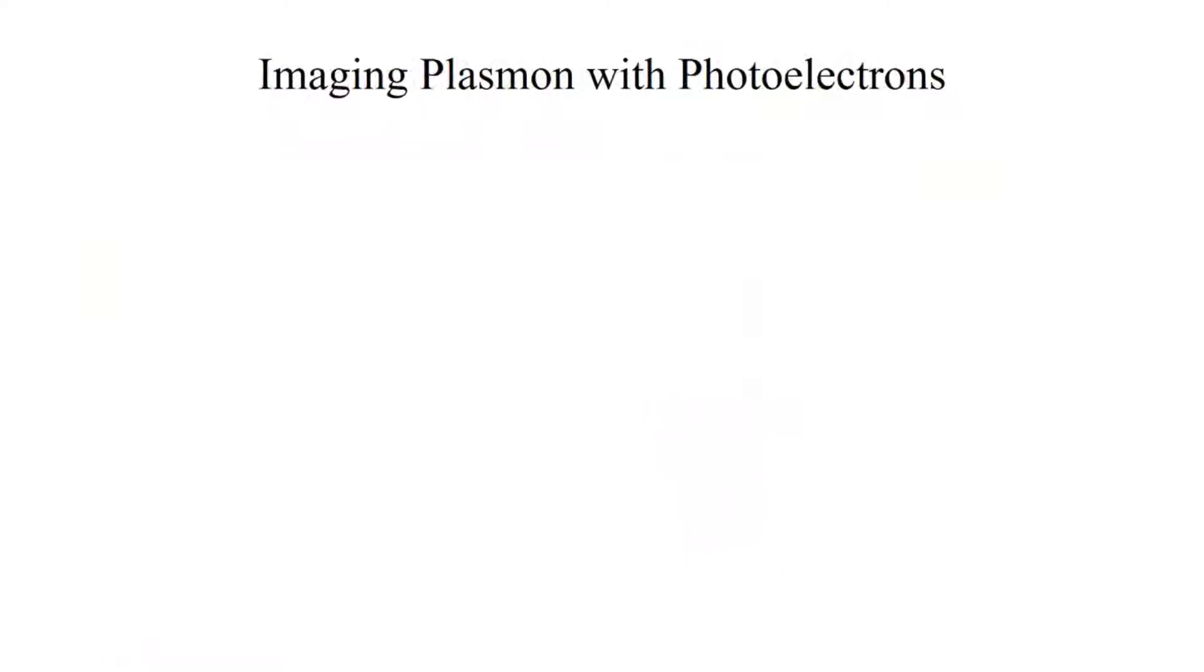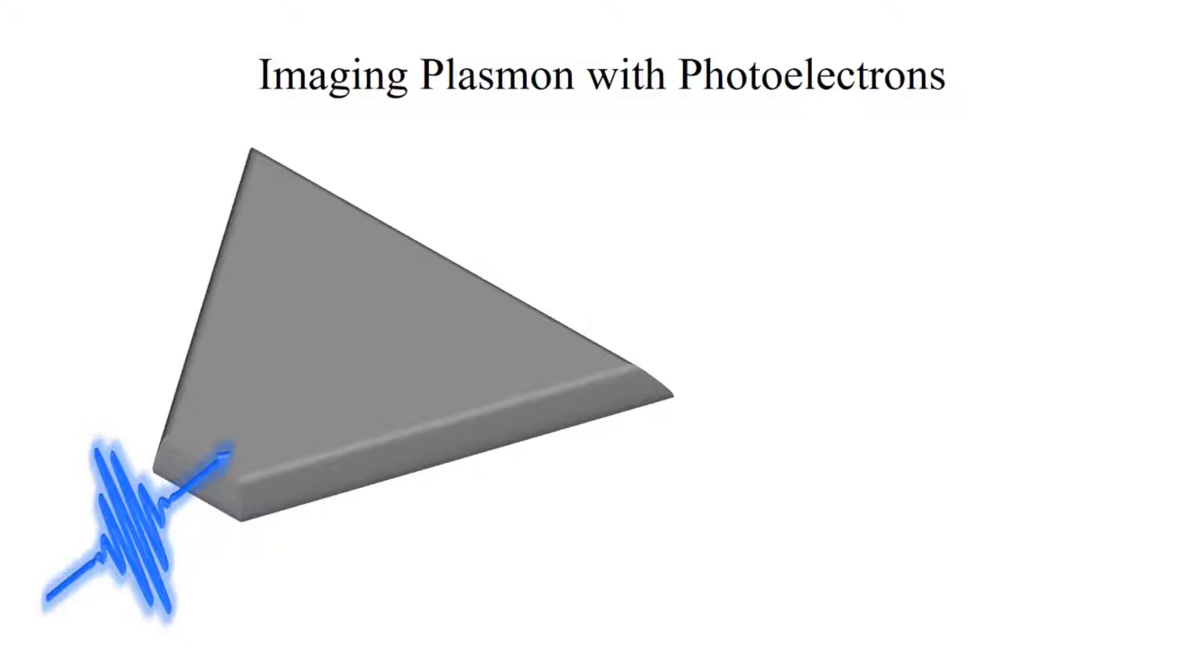When the island is illuminated by femtosecond pulses, surface plasmon polaritons are excited and launched at its sharp edges. Because nothing is faster than light, we cannot directly take snapshots of light propagating on the silver vacuum interface.